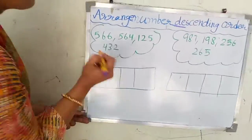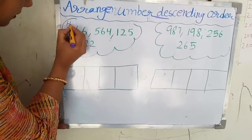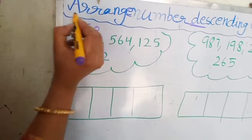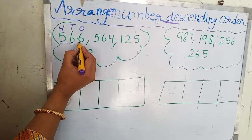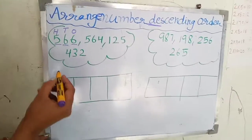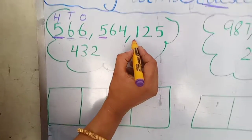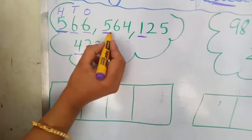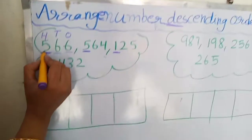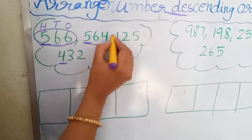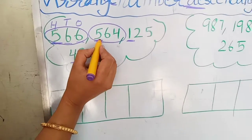Now we check these numbers — who is the biggest number? First of all we check hundreds, then tens, and last ones. Hundreds: this is 5, 5, 1, 2. So the biggest hundred digit is five. We have two numbers with five in the hundreds: 566 and 564. So we check five and five — they are equal.